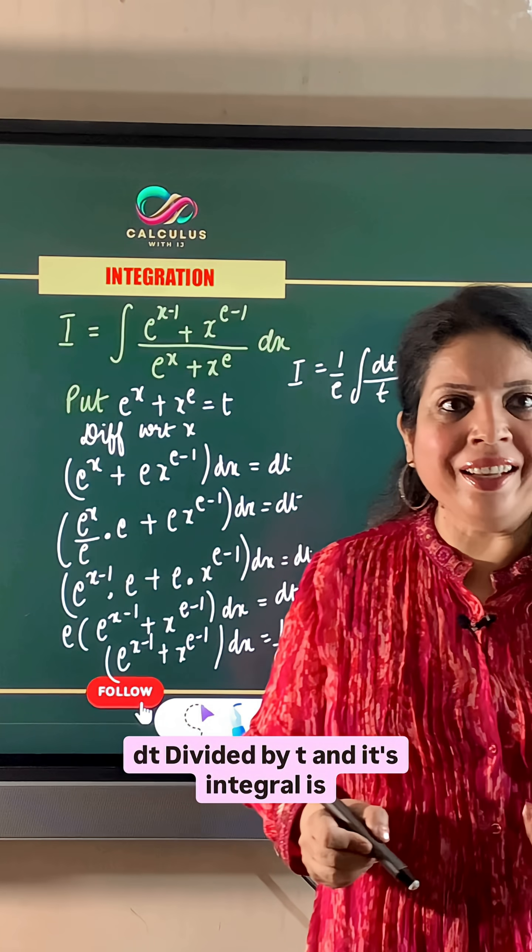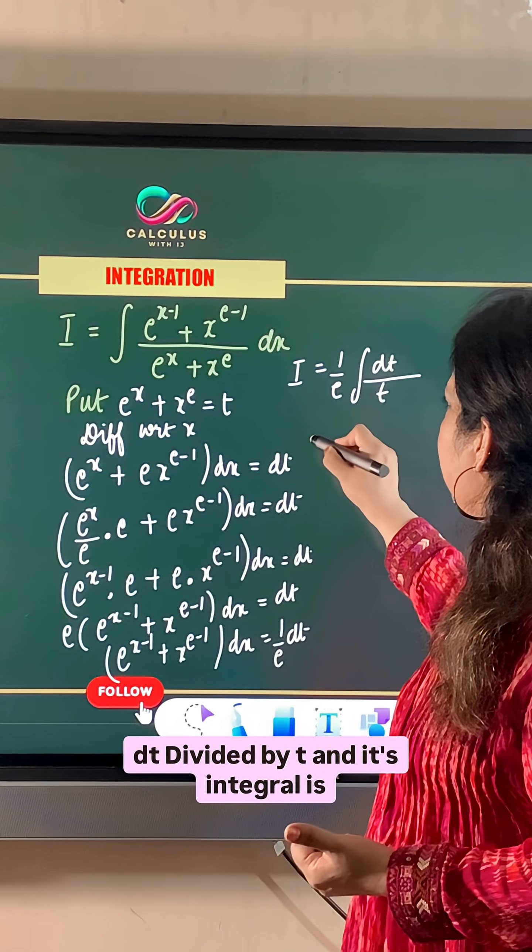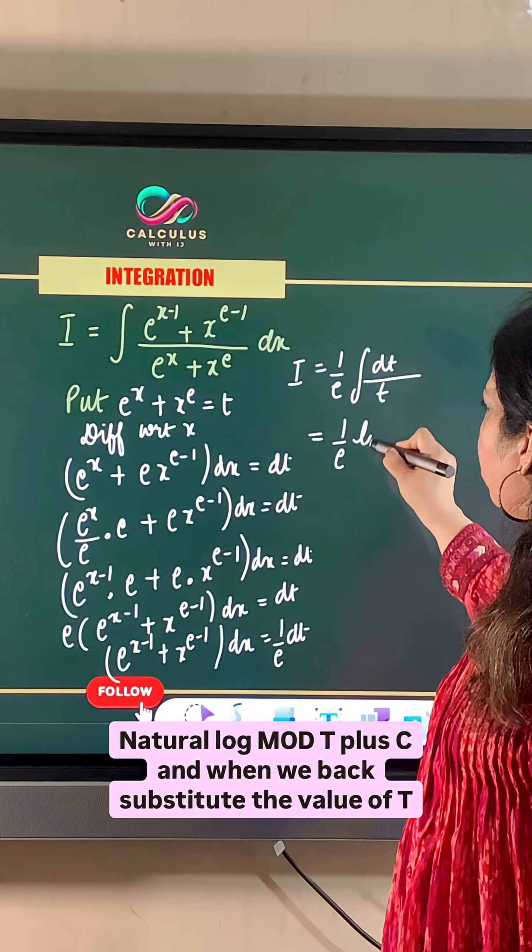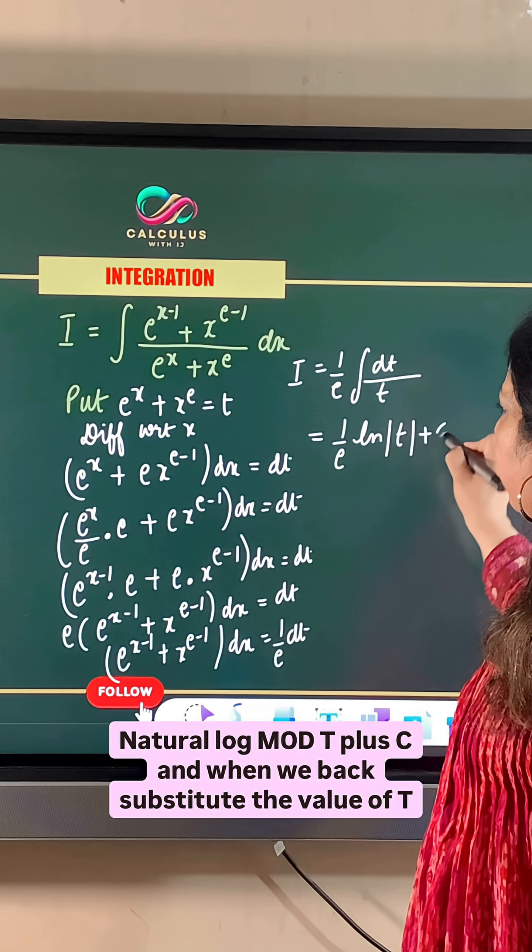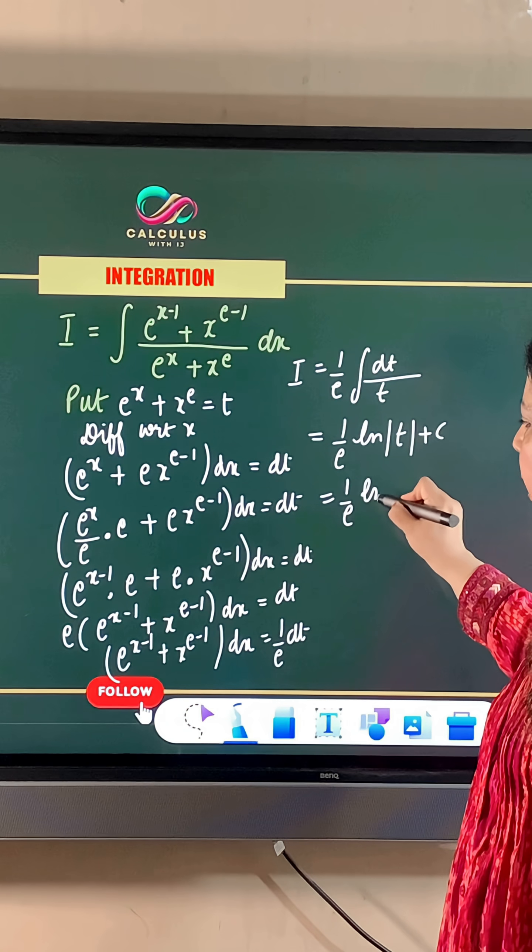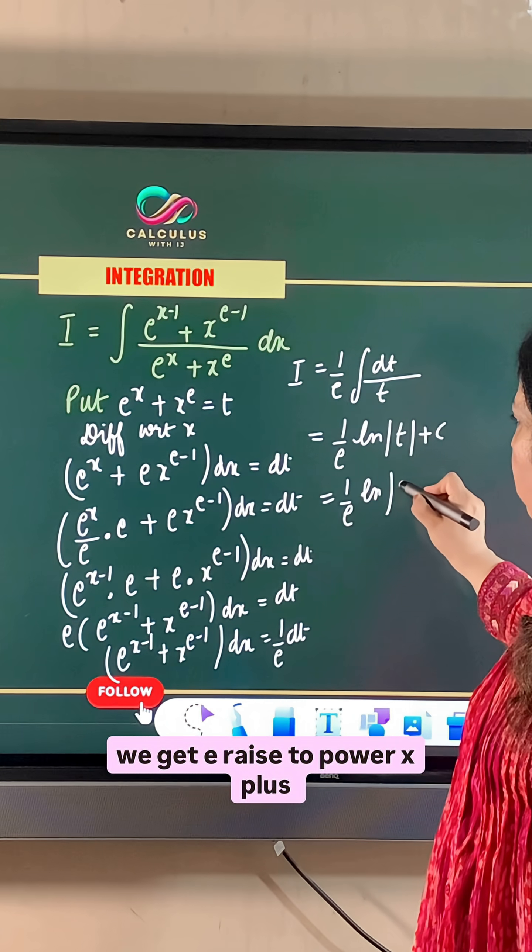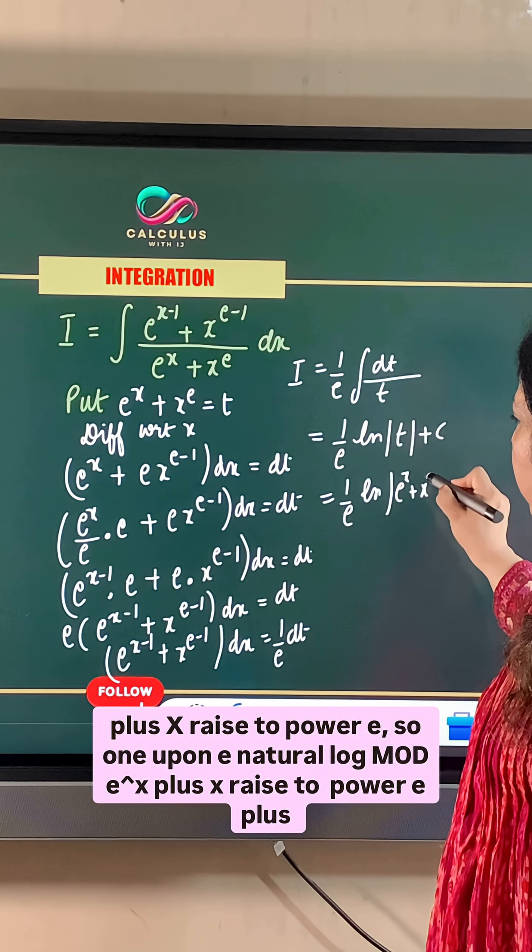So dt divided by t and its integral is natural log mod t plus c, and when we back substitute the value of t we get e raised to power x plus x raised to power e.